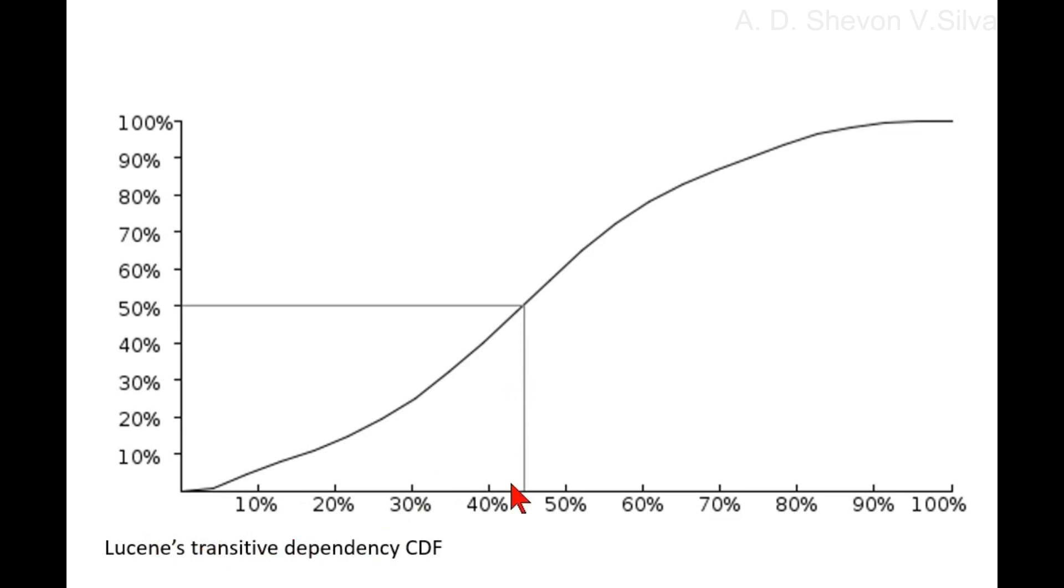Second, we shall measure the length of Lucene's transitive dependencies in a form which allows fair comparisons between programs. For this, we shall use a CDF graph showing how long Lucene's transitive method dependencies are as a percentage of its longest transitive dependency. In this figure, we see that half of Lucene's transitive dependencies are shorter than 45 percent of the length of the longest transitive dependency.